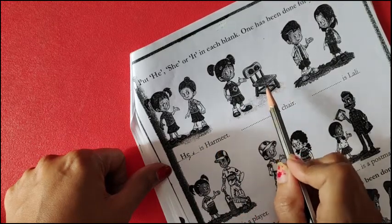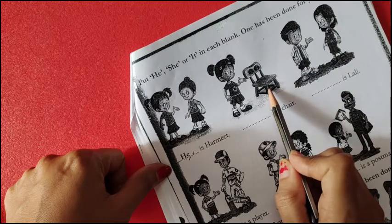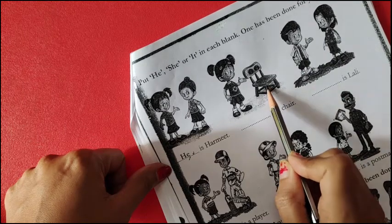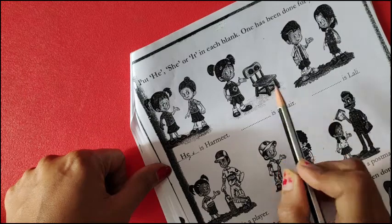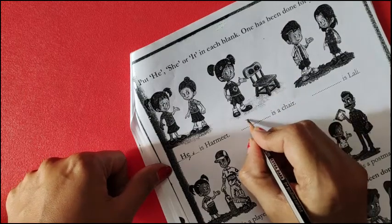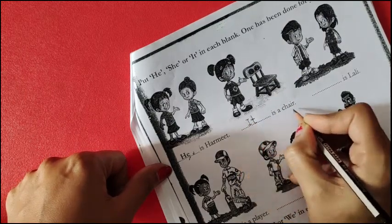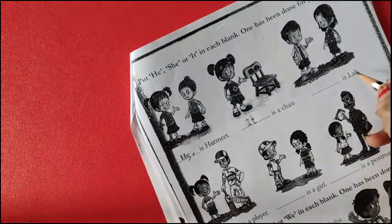Now again, the girl is showing something to you. What is this? Chair. For chair, we are going to use it because chair is a thing. It is a chair.